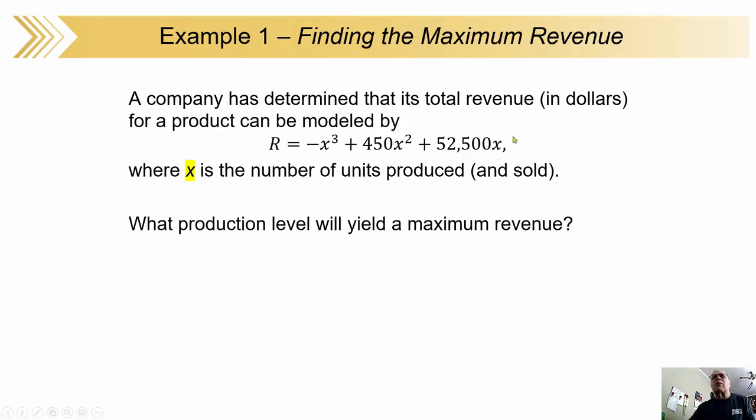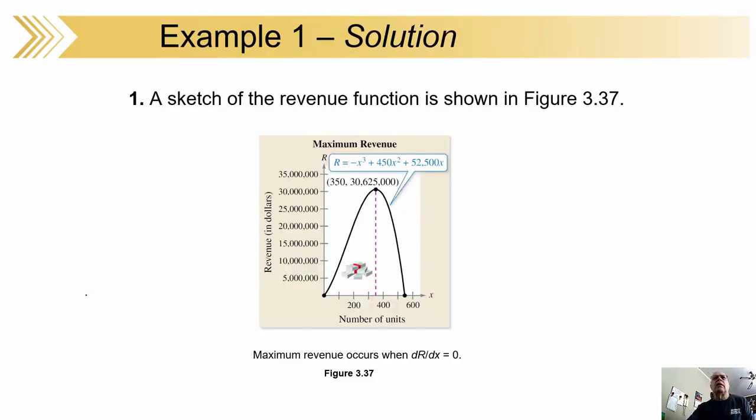The question is, with this model for the revenue, which I'm circling there, what production level would give us the maximum revenue? Remember, that's the money that's coming in. Here's a sketch of the revenue function. There's the actual revenue equation. We can get an idea of where the maximum is.